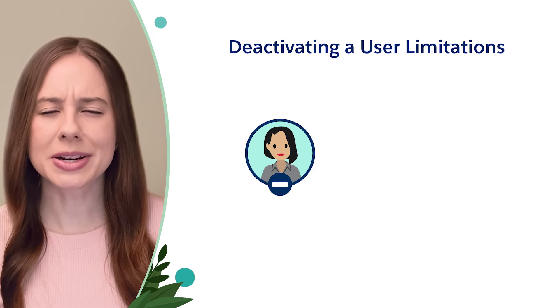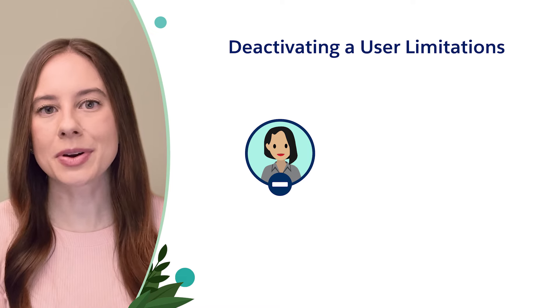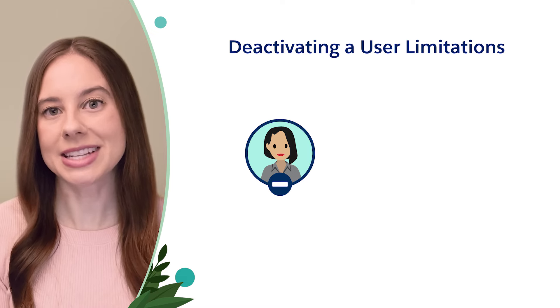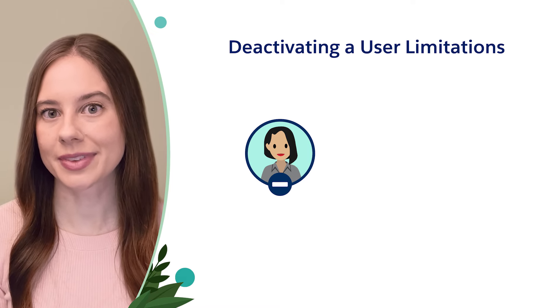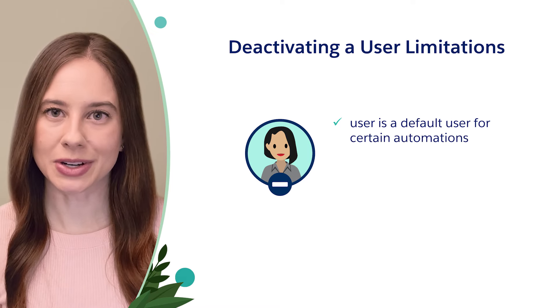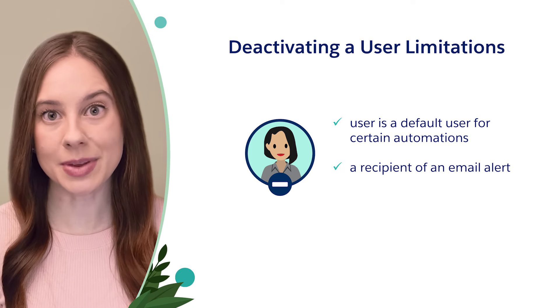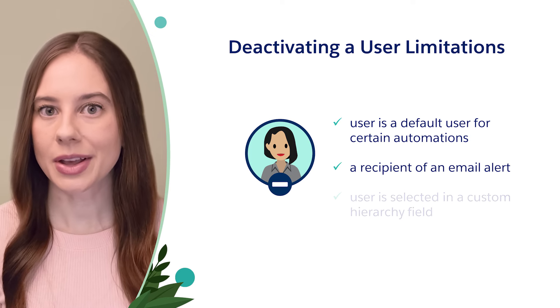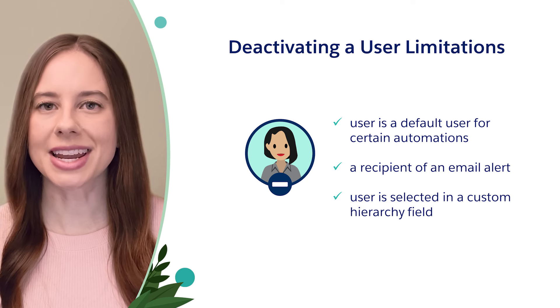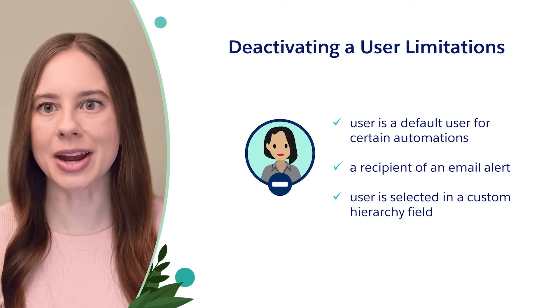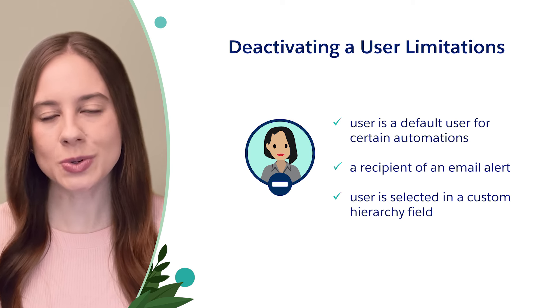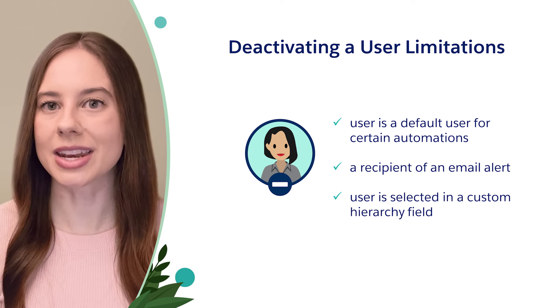You should know that there are some things in setup that can prevent you from deactivating a user — if the user is a default user for certain automations, if they're the recipient of an email alert, or if the user is selected in a custom hierarchy field, which is used to associate one user with another. If you aren't able to deactivate a user, freeze them first.